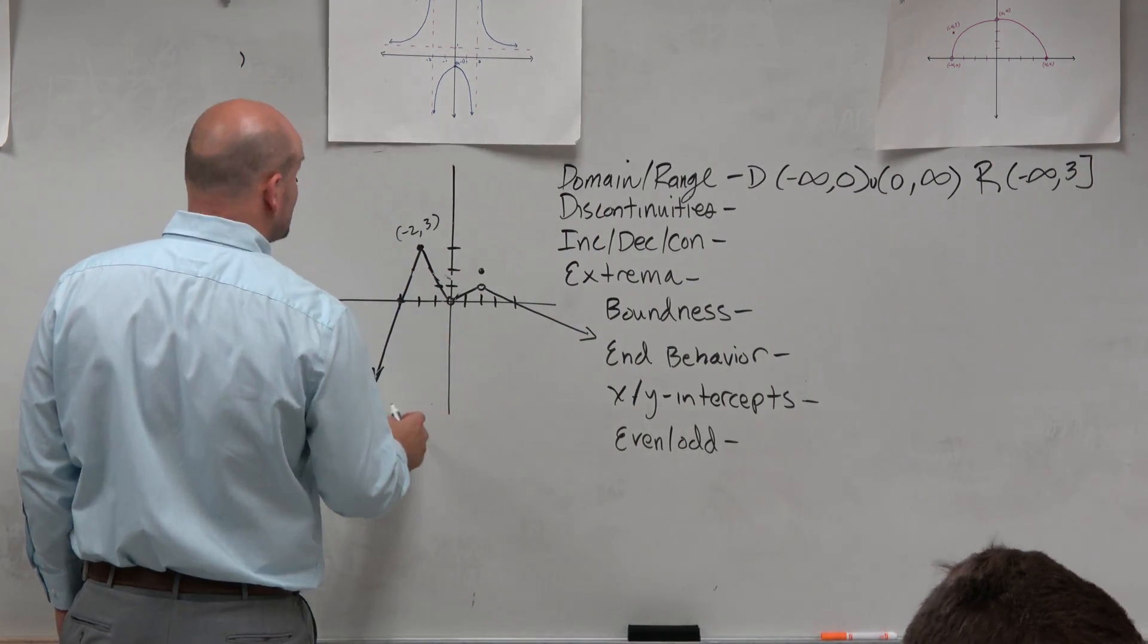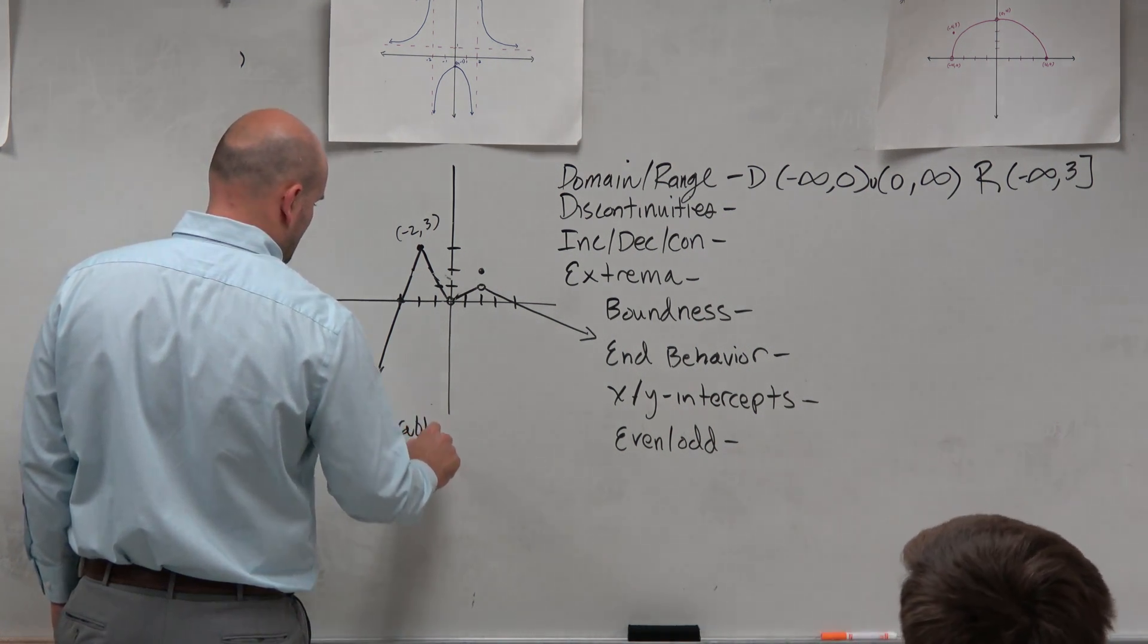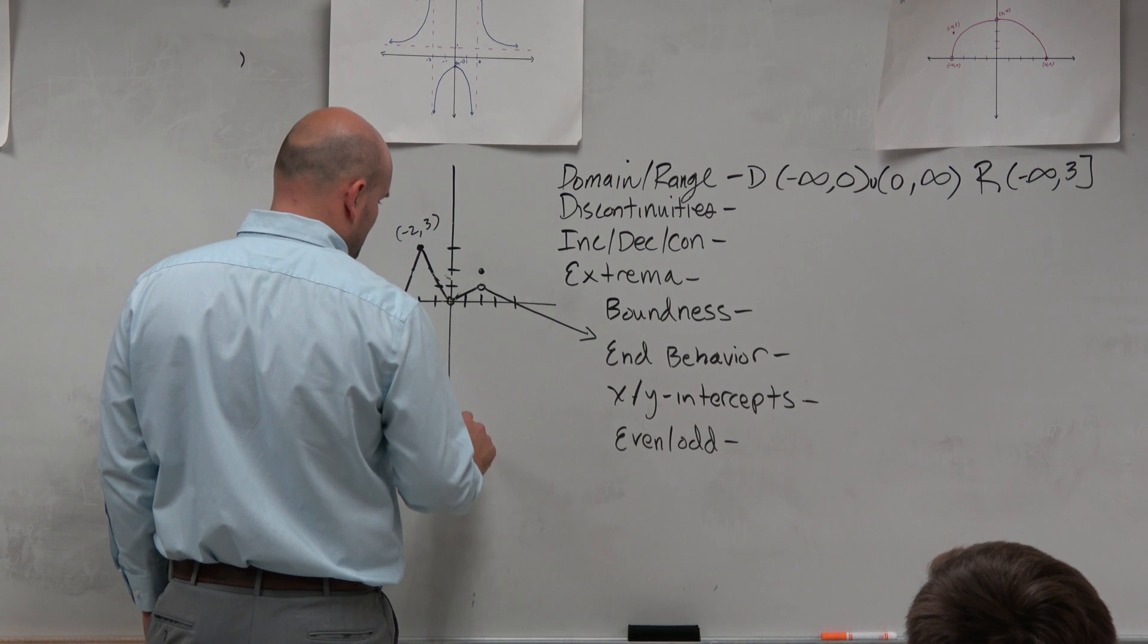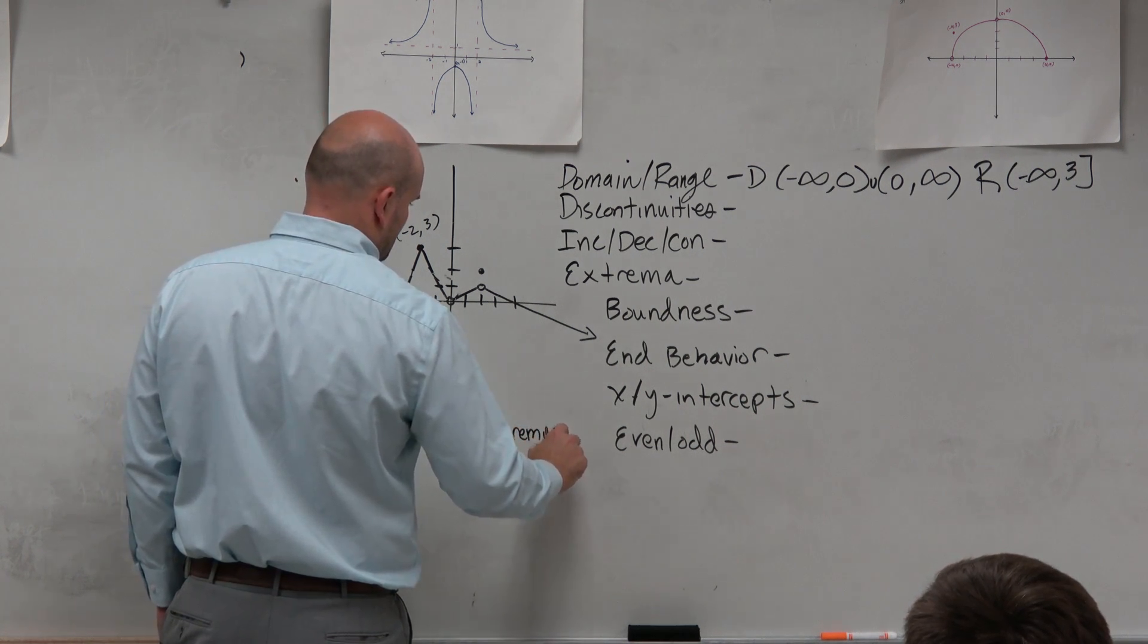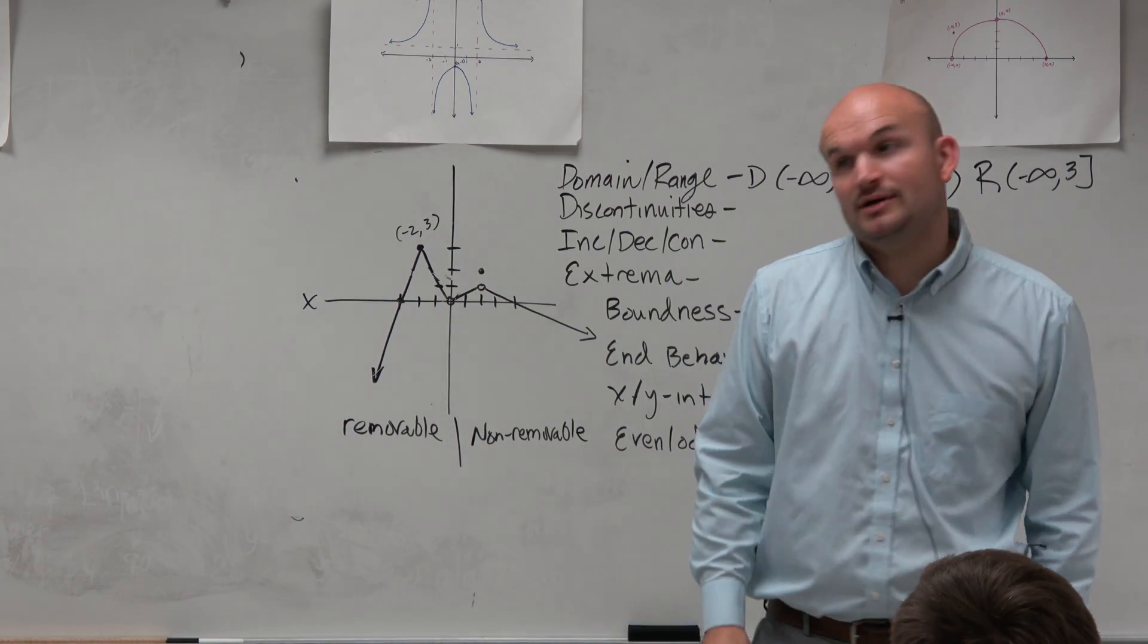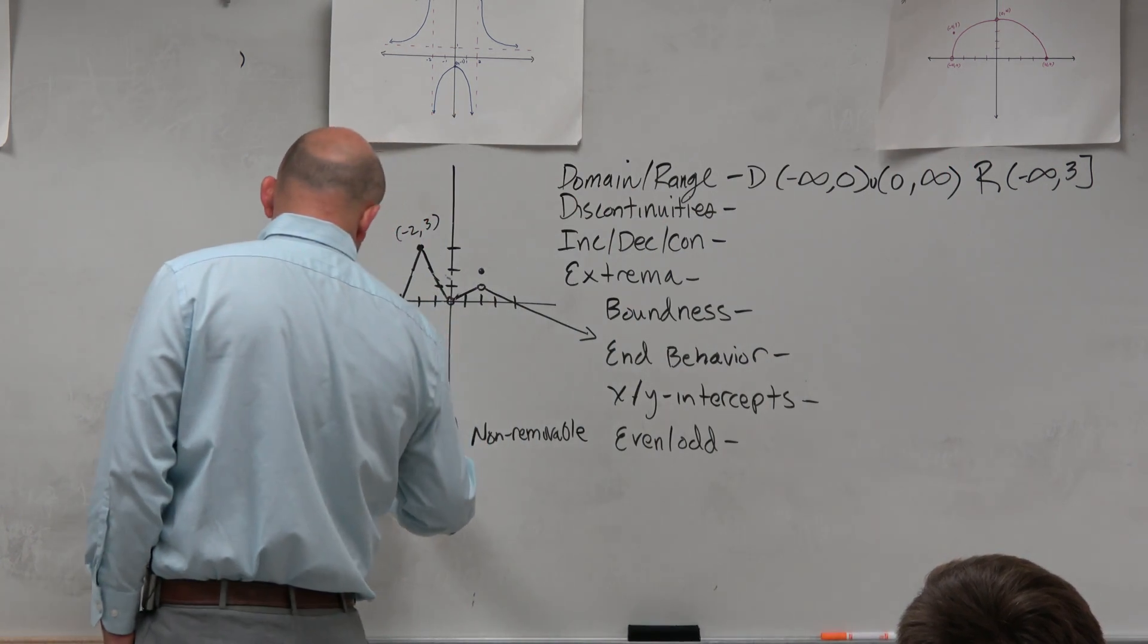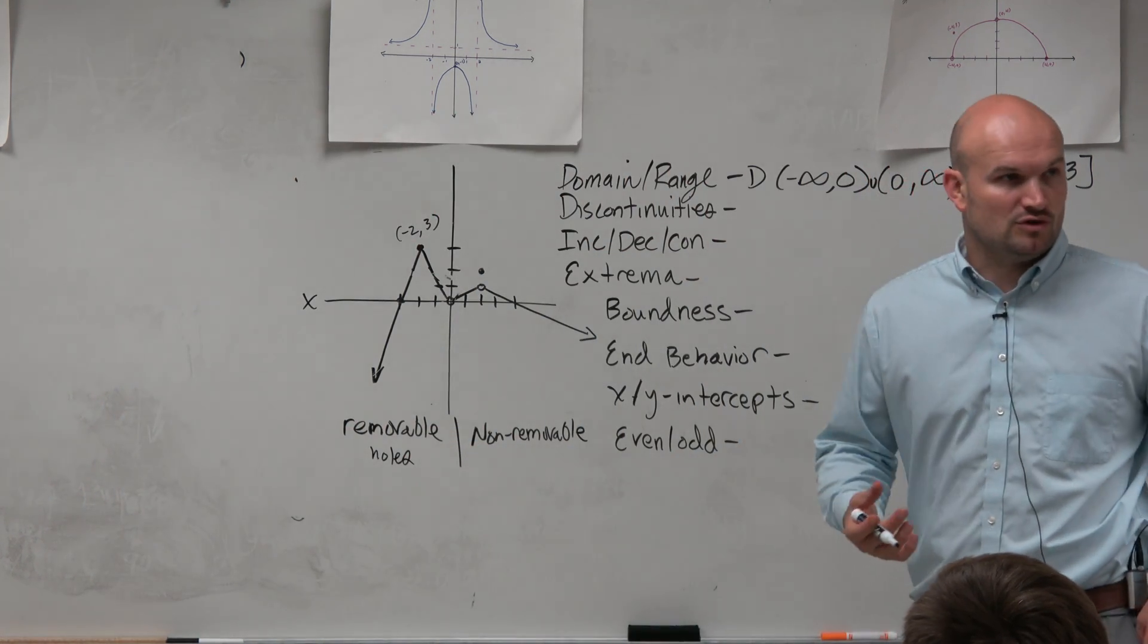So there's two kinds of discontinuities. You have removable and non-removable. So it's either removable or non-removable. Removable, which we'll talk more about later this chapter, is basically where you have holes.